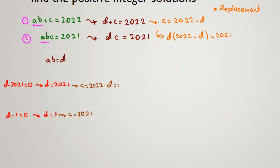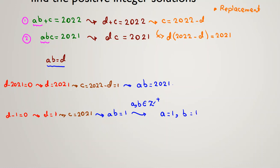Now we need to find A and B. We know A·B equals D. In the second case, A·B equals 1, and since A and B are positive integers, the only possibility is A equals 1, B equals 1. In the first case, A·B equals 2021. Prime factorizing 2021 gives 43 times 47. So A·B can be 1×2021, 2021×1, 43×47, or 47×43.